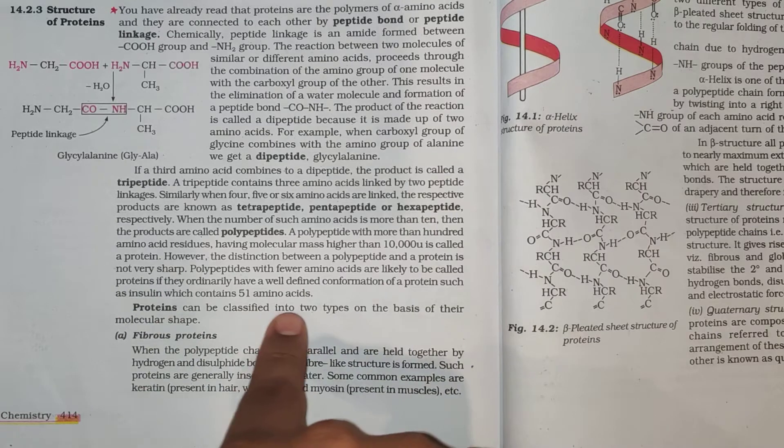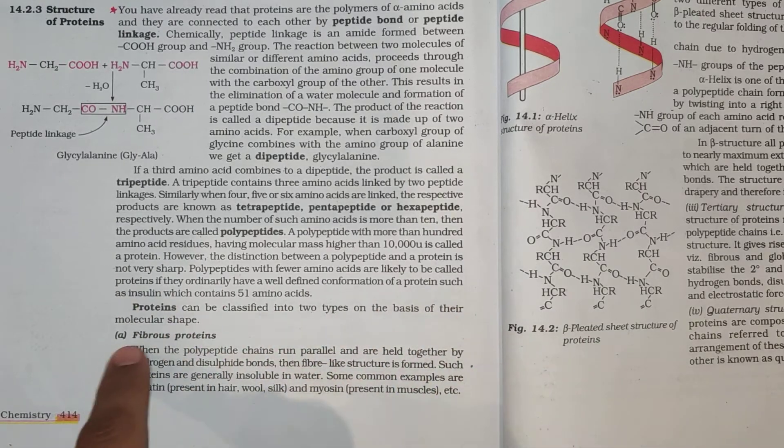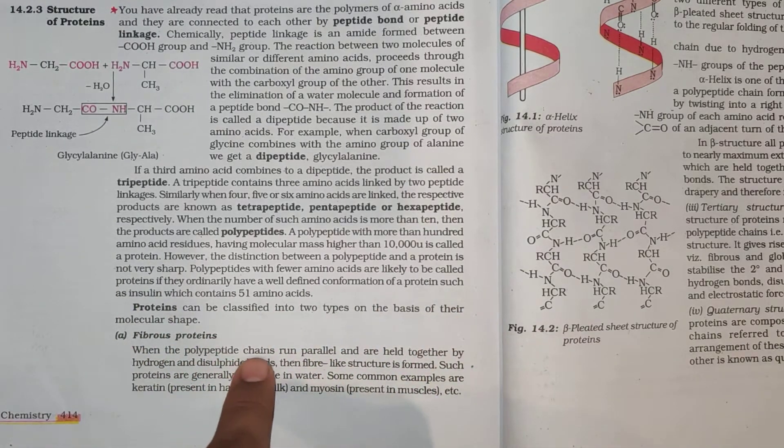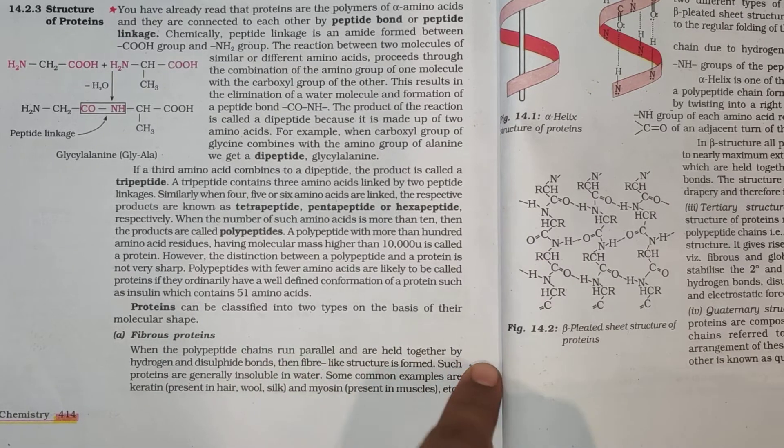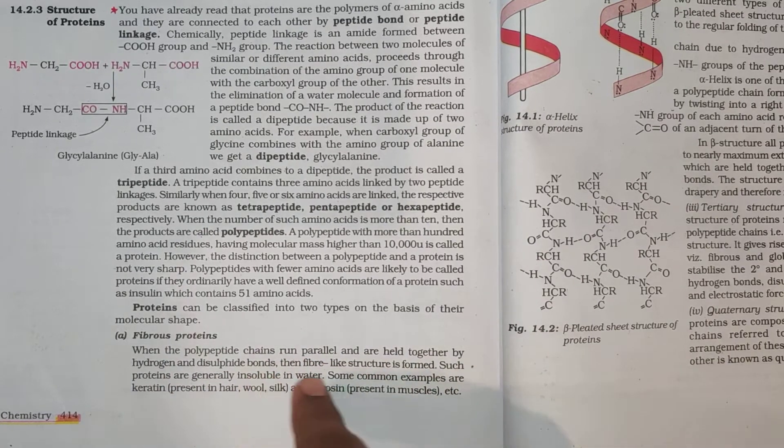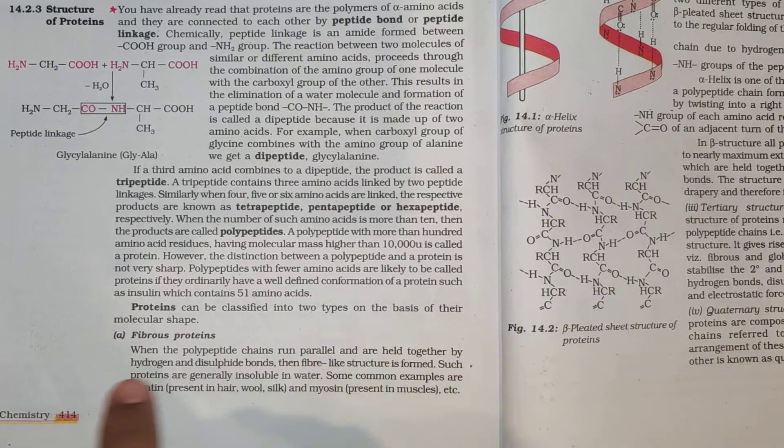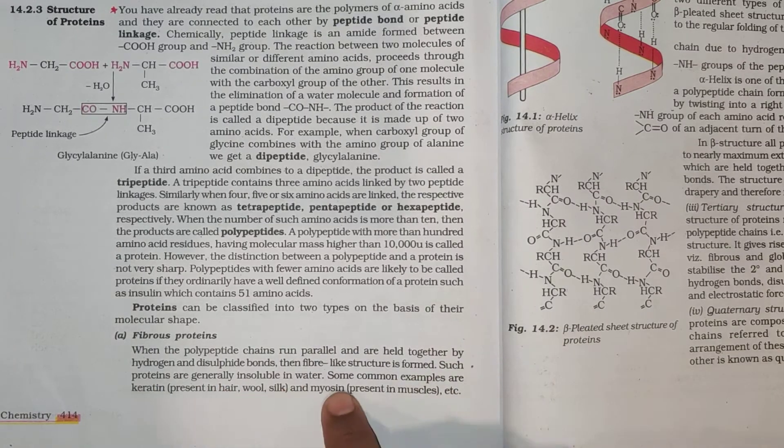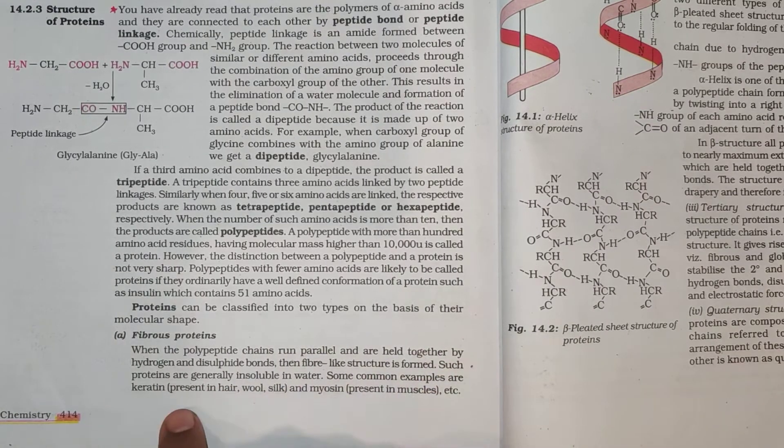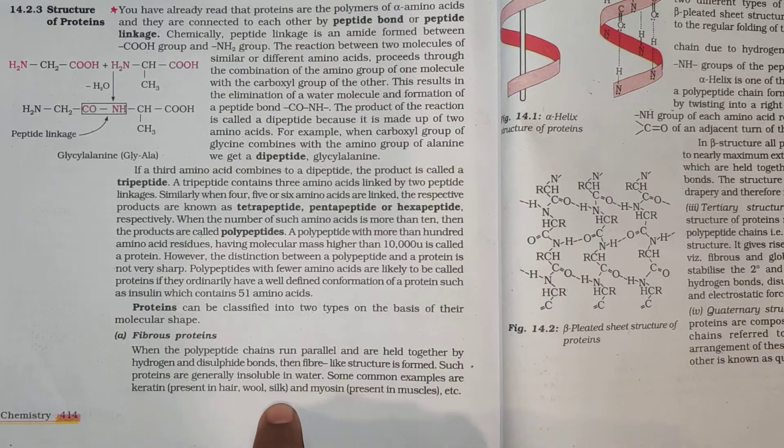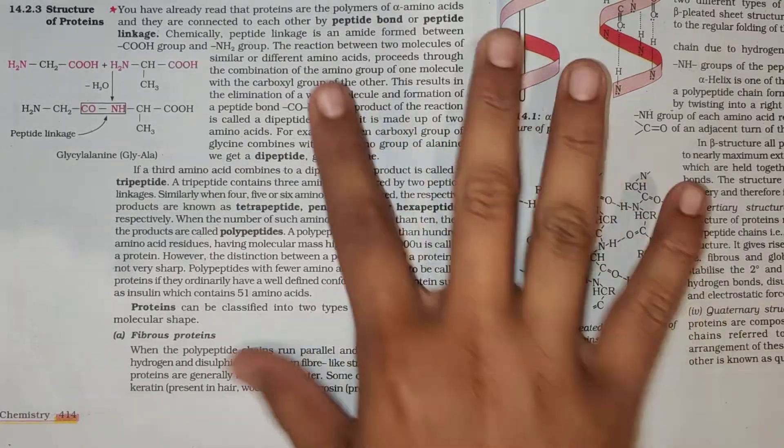Proteins can be classified into two types on the basis of their molecular shape. Fibrous proteins: When the polypeptide chains run parallel and are held together by hydrogen and disulfide bonds, then fiber-like structure is formed. Such proteins are generally insoluble in water. Some common examples are keratin, present in hair, wool, silk, and myosin, present in muscles.